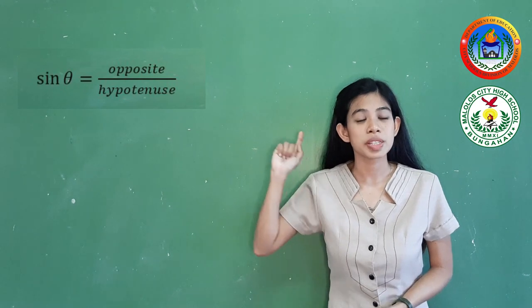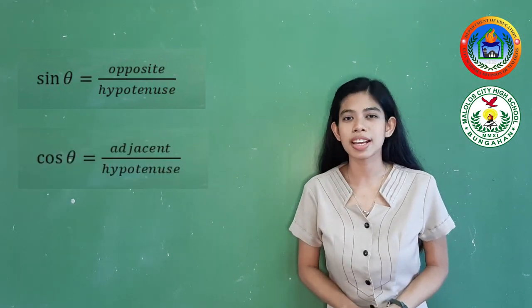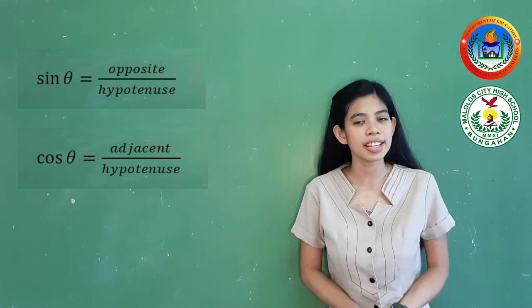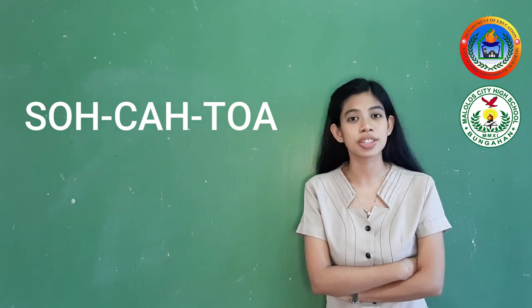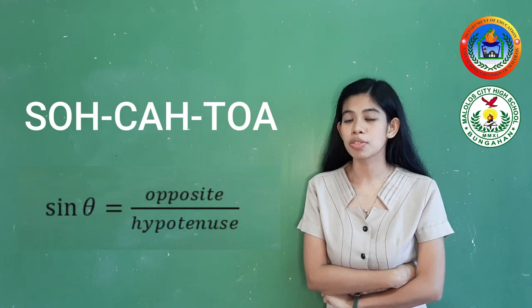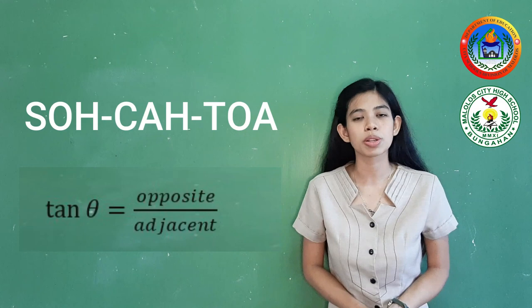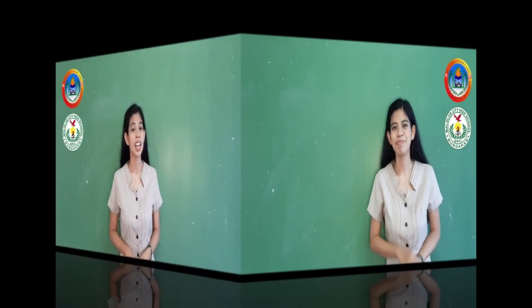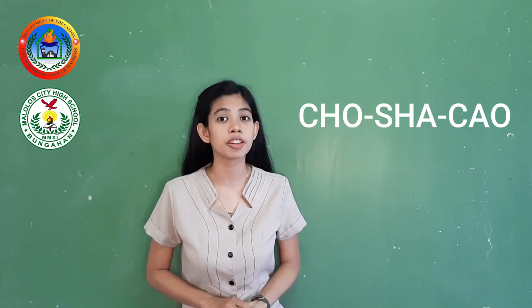Let us now apply our knowledge of the parts of a right triangle to understand the six trigonometric ratios. The sine of theta equals the opposite side over the hypotenuse. The cosine of theta equals the adjacent side over the hypotenuse. And the tangent of theta equals the opposite side over the adjacent side. To remember these, you may use the mnemonic SOH-CAH-TOA: SOH for sine equals opposite over hypotenuse, CAH for cosine equals adjacent over hypotenuse, and TOA for tangent equals opposite over adjacent.